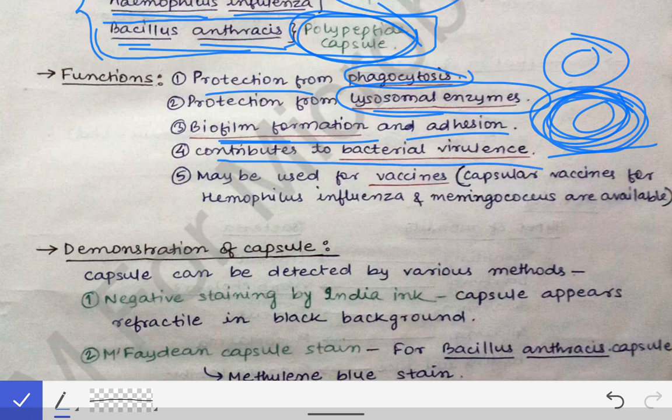The capsule also contributes to bacterial virulence. If the bacteria has extra protection, our immune system will be unable to kill it easily, which means the virulence of the bacteria is indirectly increased. That is why the capsule contributes to increased bacterial virulence.